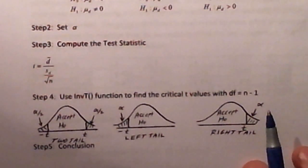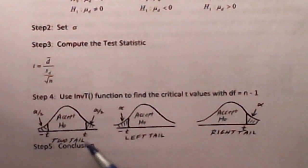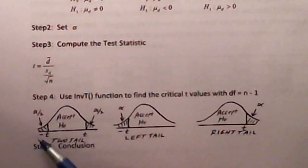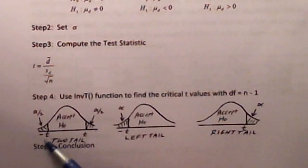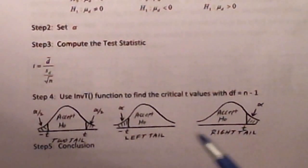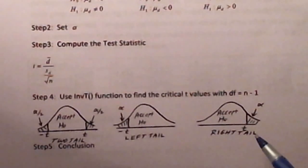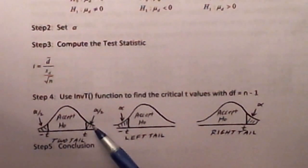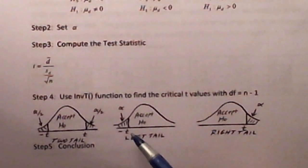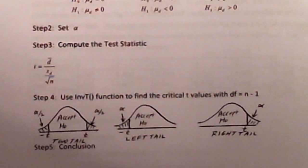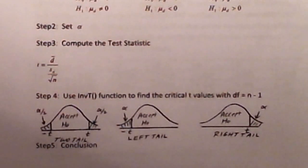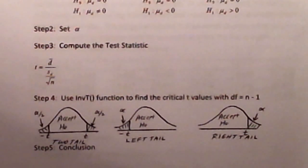Step four is where we clearly indicate the rejection and acceptance regions depending upon what kind of test we are conducting. We use the Student T distribution, which is very similar in shape to the normal distribution. Critical T values will either be two of them for a two-tailed test, or one for a lower-tailed test, or one upper critical T value for a right-tailed test. For a two-tailed test, the rejection regions are of size alpha divided by two, and for a one-tailed test, the rejection region is of size alpha. Step five is always the conclusion, where we determine whether we have enough sample evidence to reject the null hypothesis or fail to reject the null hypothesis.